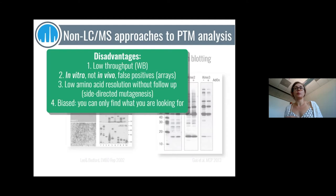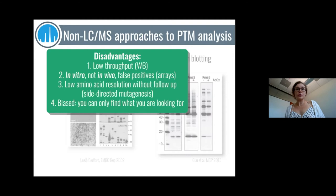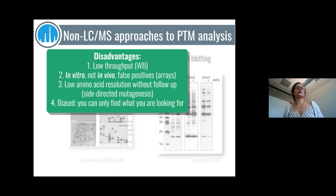Both Western blotting and arrays tend to give low-resolution information — you may not be able to tell which specific amino acid was modified and may need follow-up experiments like site-directed mutagenesis to narrow down which specific serine or lysine was modified. The biggest disadvantage of all these techniques is that you will never find things you don't expect to find — the scope of your question is determined by what antibody you have or what's on your array. If something is happening with peptides or sequences not on your array, you will never learn about it.